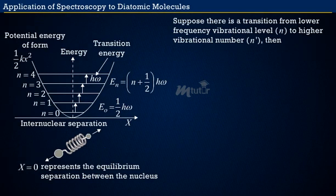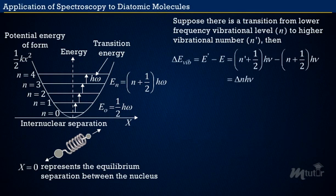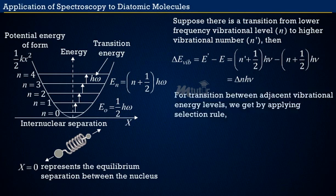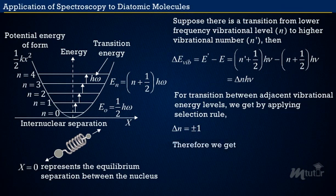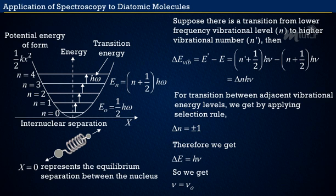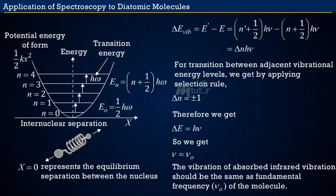For a transition from a lower vibrational level N to a higher level N′, delta E vibration equals h·nu times delta N. Applying the selection rule delta N equals plus or minus 1 for transitions between adjacent vibrational energy levels, we get delta E equals h·nu, so nu equals nu₀. This means the frequency of absorbed infrared radiation should be the same as the fundamental frequency of the molecule.